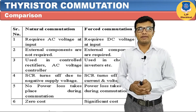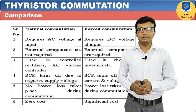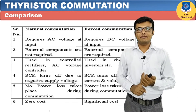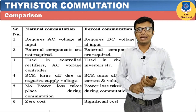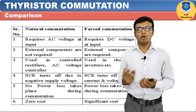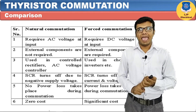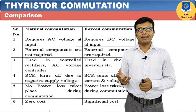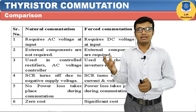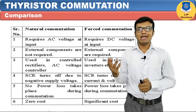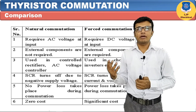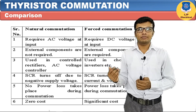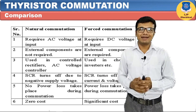The differences between natural commutation and forced commutation are: First, natural commutation requires AC supply whereas forced commutation works on DC or AC. Second, external components are not required in natural commutation, whereas in forced commutation external components such as R, L, and C are required. Third, natural commutation is used in controlled rectifiers and AC voltage controllers, whereas forced commutation is used in chopper circuits and inverters.